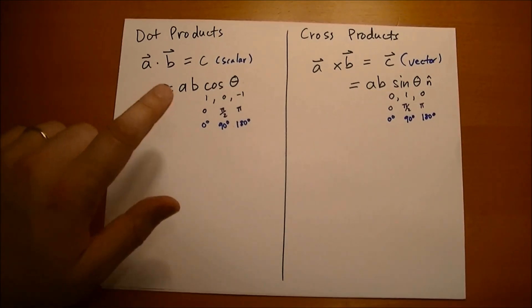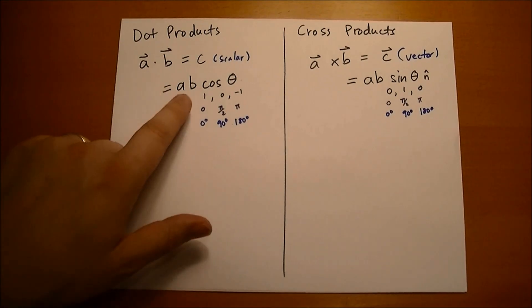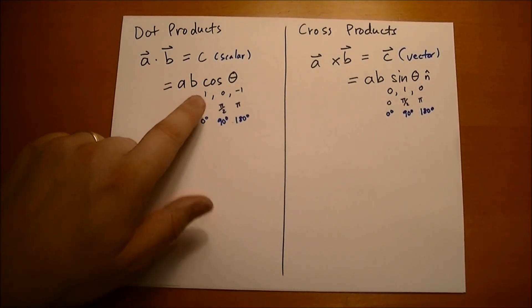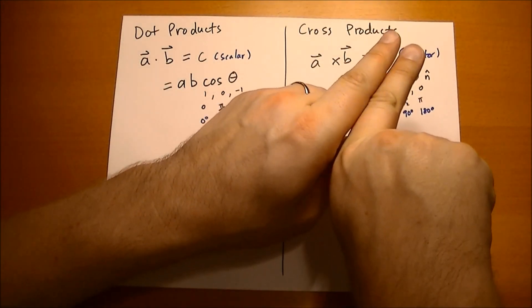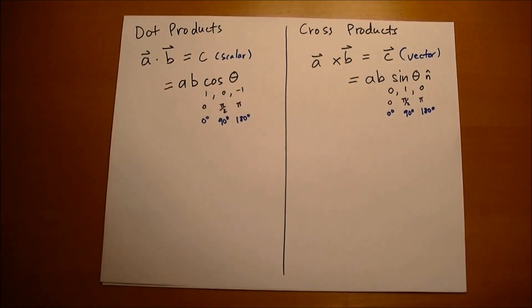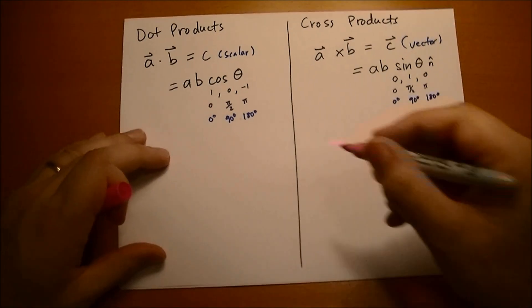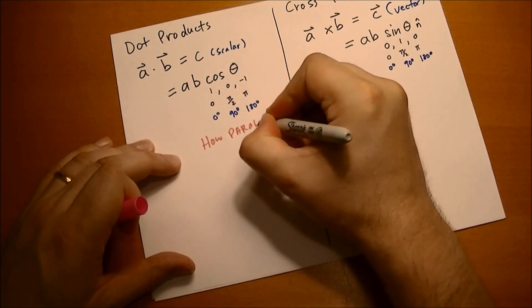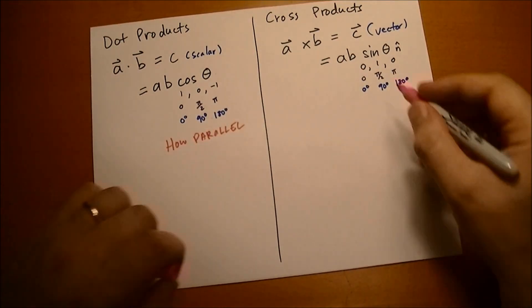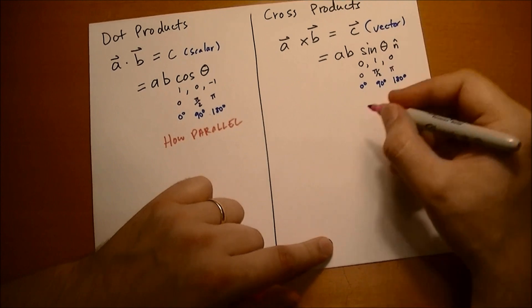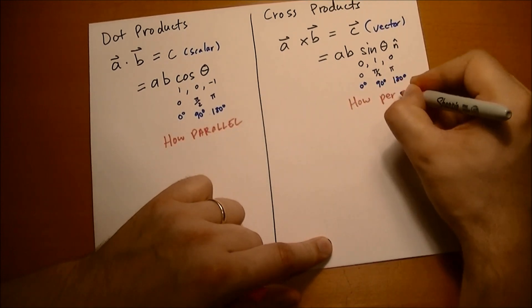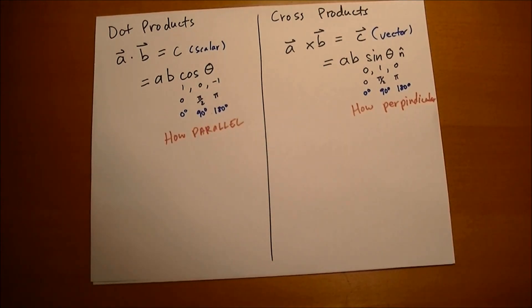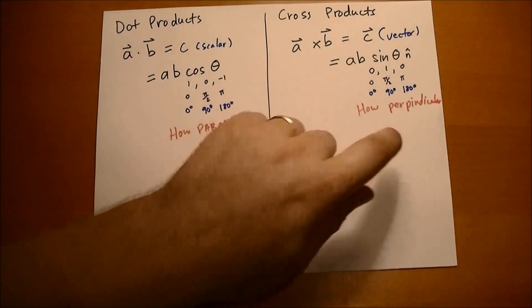So this dot product is maximized to the product of the lengths of the vectors when you have the two vectors aligned, pointing the same direction. So dot product tells you how parallel they are. Whereas the cross product is maximized when they're perpendicular, so this will tell you how perpendicular they are.